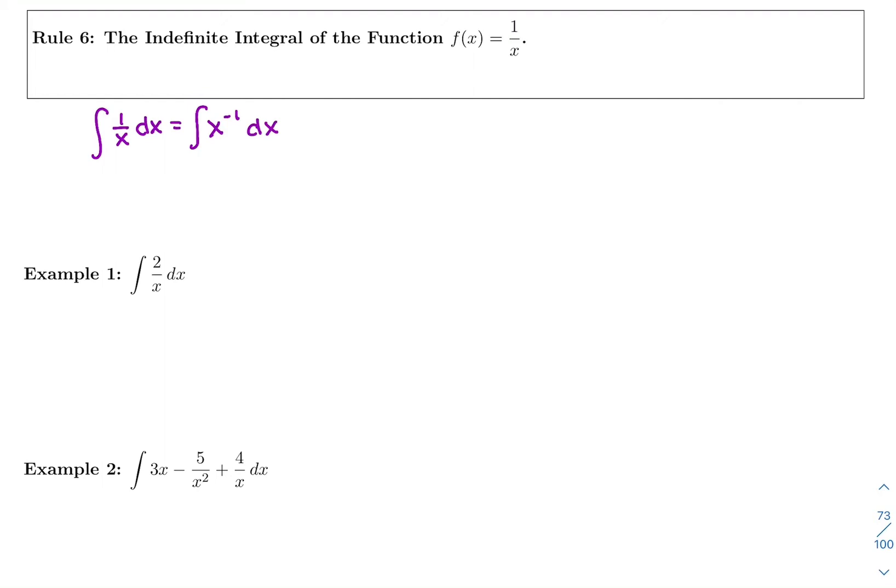And then we would say if we have x to a power, the rule is to add 1, put it as our new denominator and our new power. So negative 1 plus 1 would be 0. So I'd have 1 over 0, x to the 0, plus c.